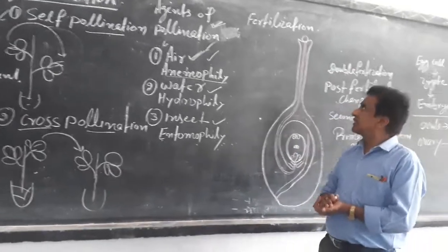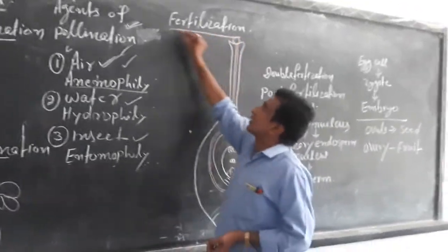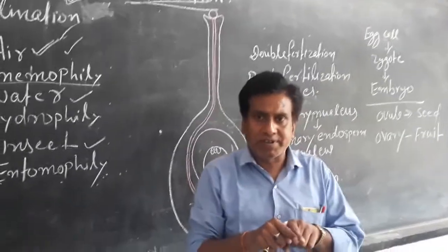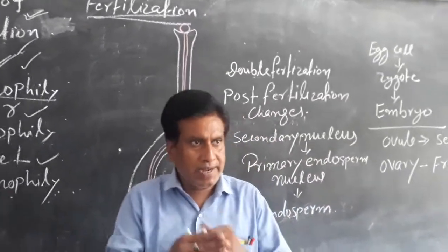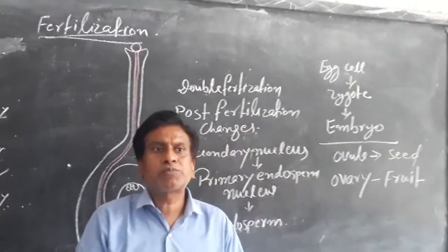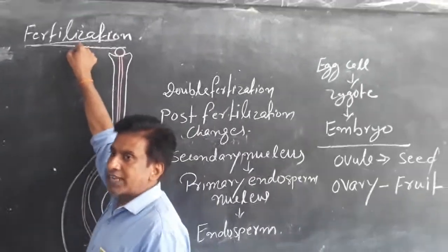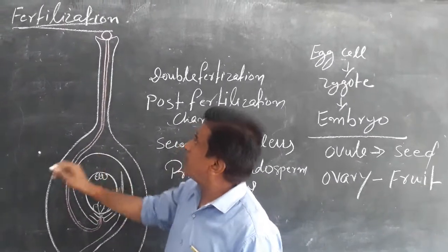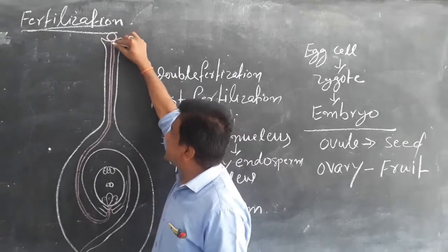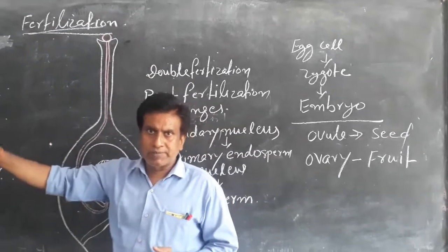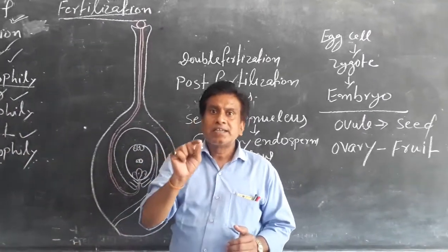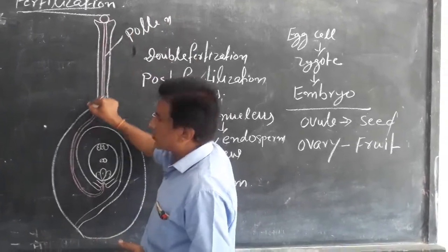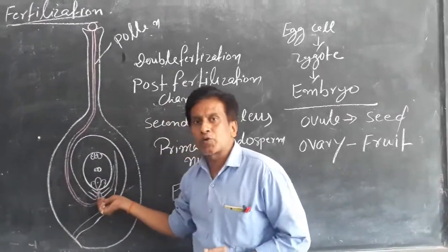My third subtopic is fertilization. Fertilization is a process in which the male gamete fuses with the female gamete. When the male gamete fuses with the female gamete, this process is known as fertilization, and the fusion takes place inside the ovule. When pollen grain falls on the stigma, it germinates and its vegetative cell produces a pollen tube. This pollen tube penetrates into the ovule and enters through the micropyle.